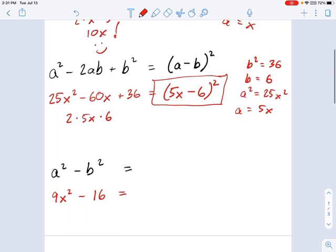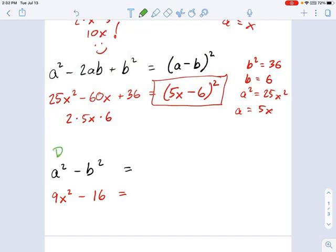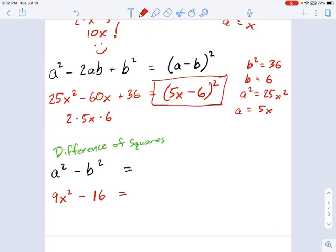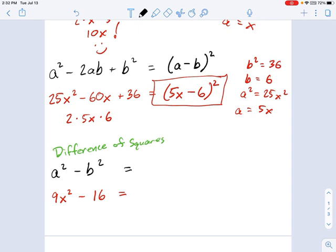Now, one that comes up super common is this identity here called difference of squares. That's why I didn't want to call the other one a perfect difference of squares. This is difference of squares. And the reason it's called difference of squares is because you have a squared and b squared, and we're taking the difference of them. It's a squared minus b squared. So the formula for this, the one you should absolutely memorize, because this comes up so often, is a plus b times a minus b.